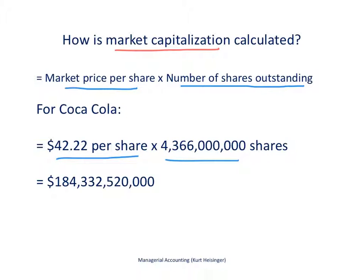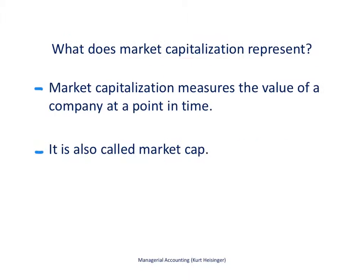So once we take the market price per share — $42.22 — and multiply it by the number of shares that are outstanding, we get the market capitalization for Coca-Cola of $184,332,520,000. So that is the value of the company at that point in time. The market capitalization measures the value of a company at a point in time, and the more common term, even more common than market capitalization, that is used out there is simply market cap.